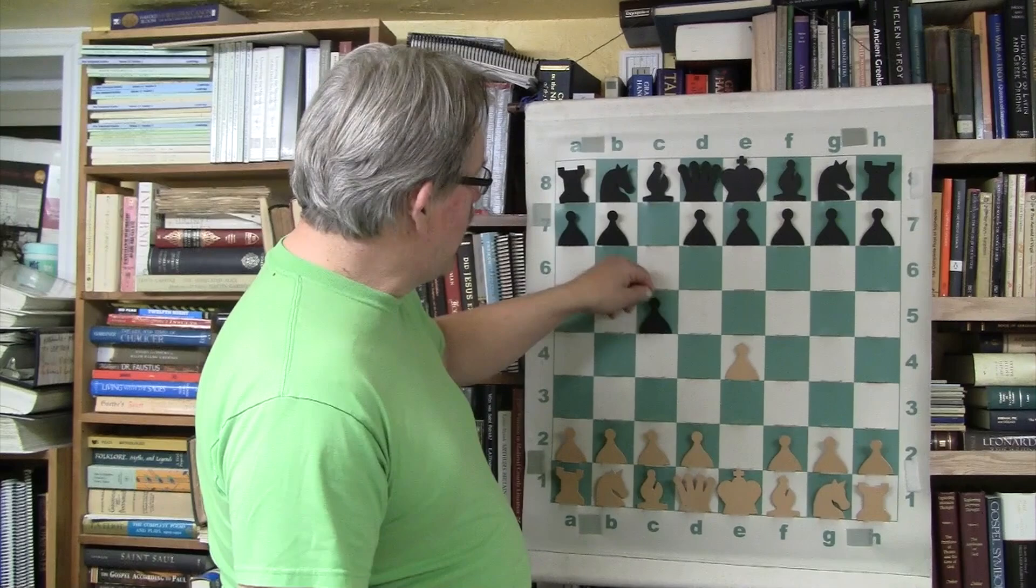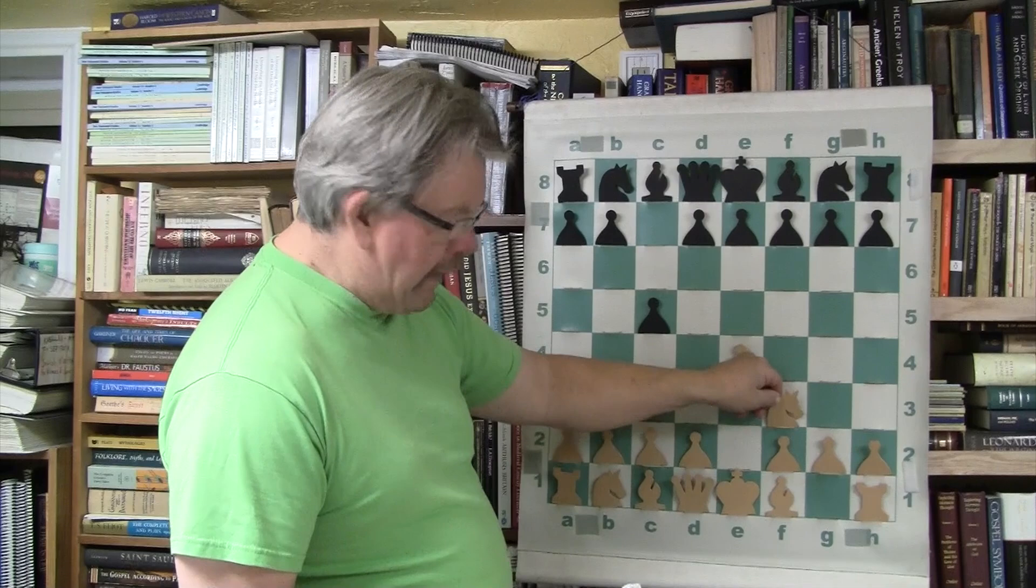And this one is versus Mednis. Mednis throws a Sicilian at Bobby. Let's see how Bobby handles this typical Sicilian. Again, at this point he is still only 13 years old. I haven't gotten to the book yet where it says he's 14, so I'm assuming all these games under the 13th year means that he's 13 years old.